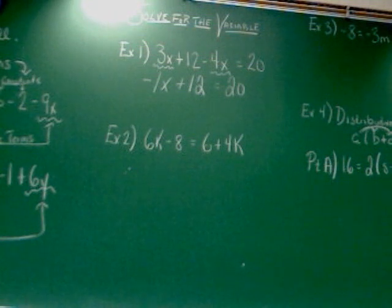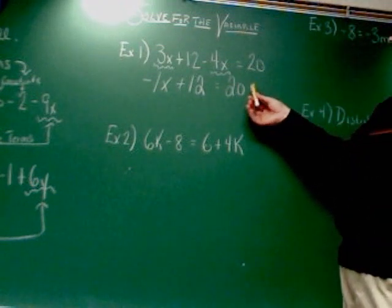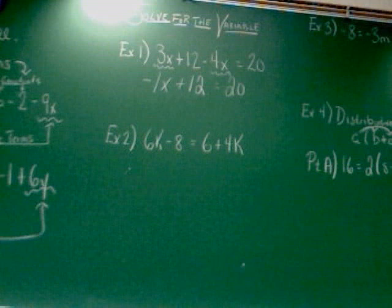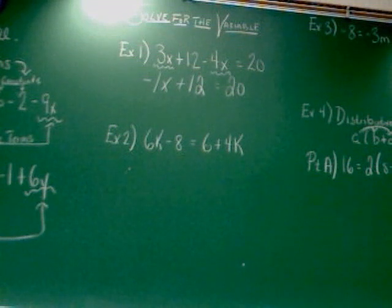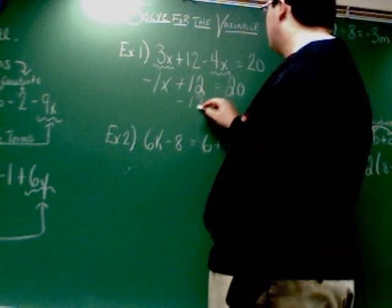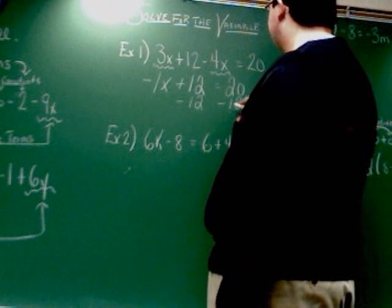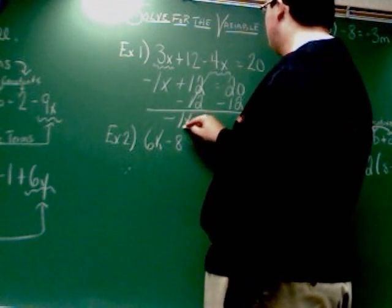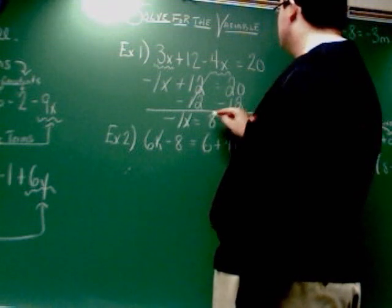Now, the other step says to move the constants or the lonesome numbers to the right side. So that's the other thing I have to do. As you can see, 20, that's already on that right side, but the 12 isn't. So I'm going to have to move that 12 out of the way. Since it's going to go to the other side of the equal sign, I have to do the opposite. So I have to subtract 12. Do that, and I get negative 1x equals 8.